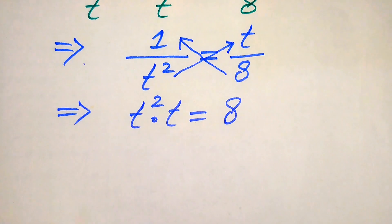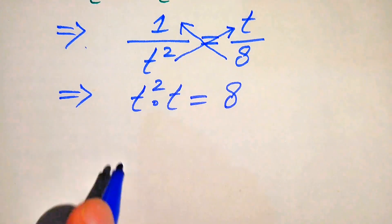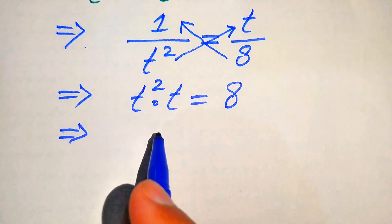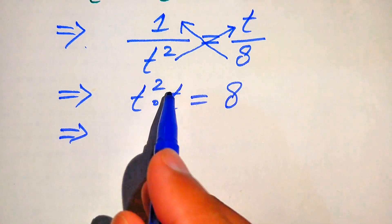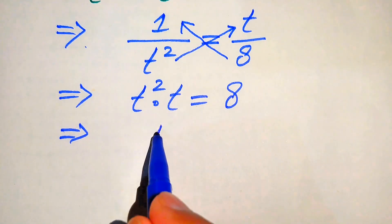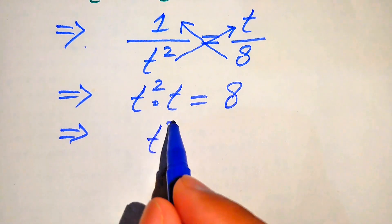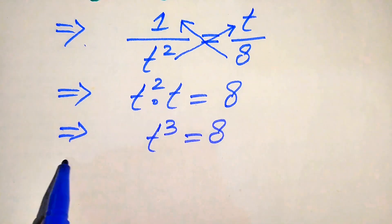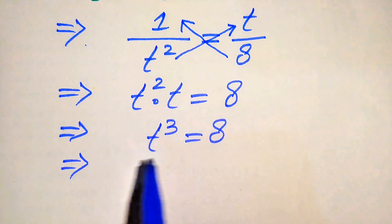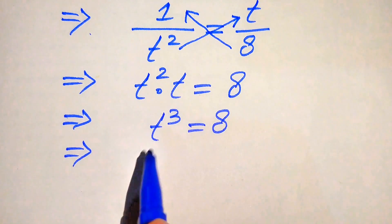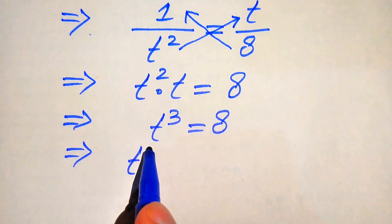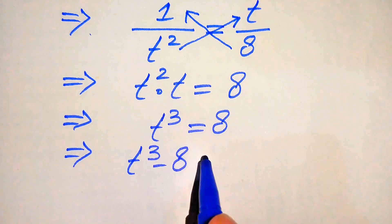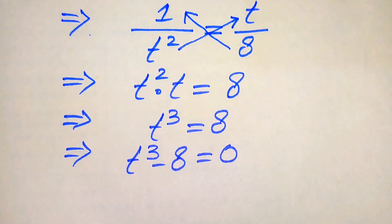The bases of these two terms are the same, so we add the exponents: 2 plus 1 becomes 3, giving t cubed equals 8. We then move 8 to the left hand side, written as t cubed minus 8 equals 0.